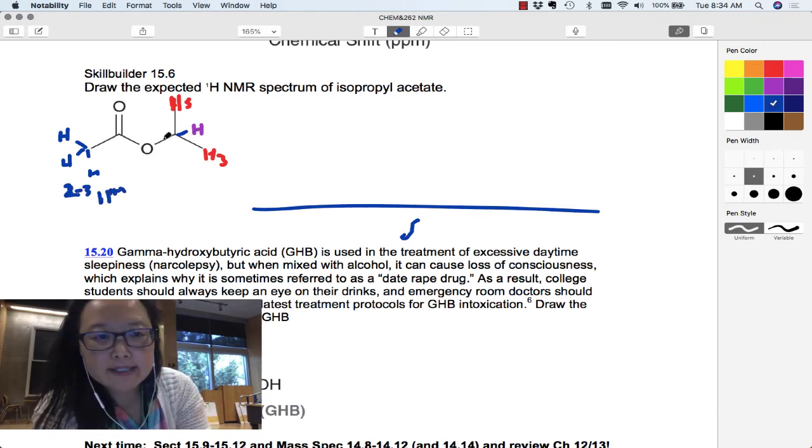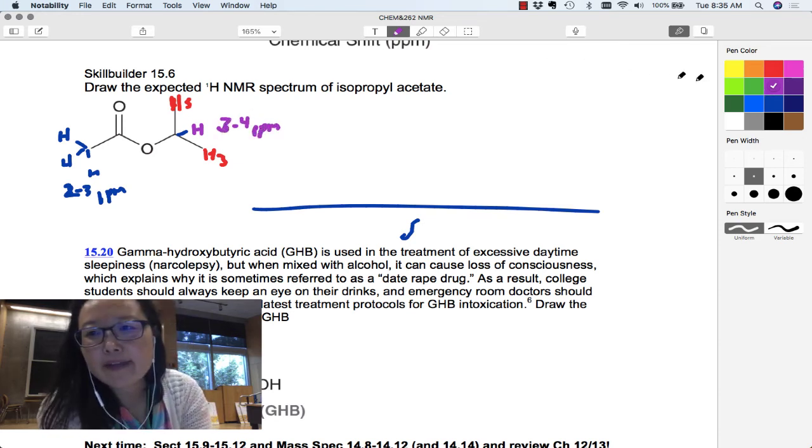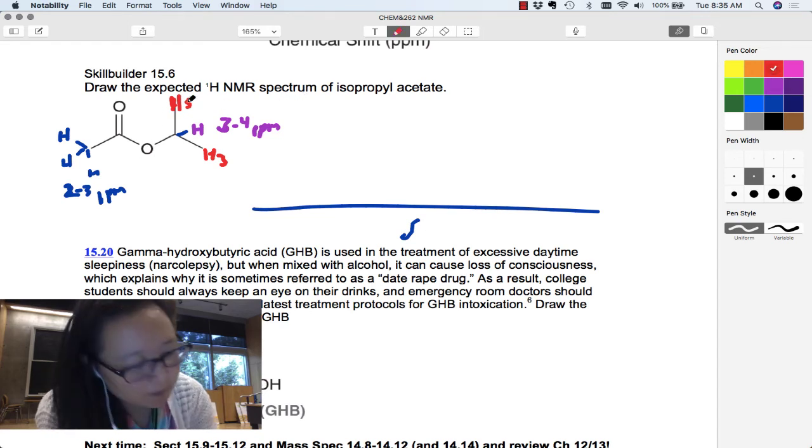This hydrogen is on a carbon next to an oxygen. Now this is going to make it more downfield. But the value that I told you was think of that as between three to four. So I'm purely going based off the chart that I showed you. And then the other ones are farther away from that oxygen, so they're going to be more like zero to two or one to two.